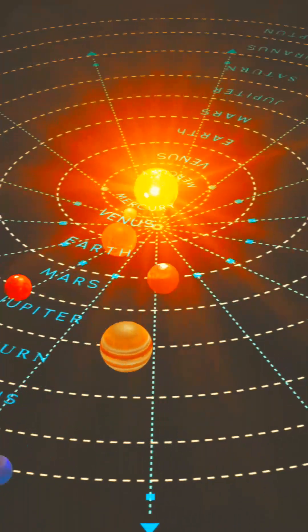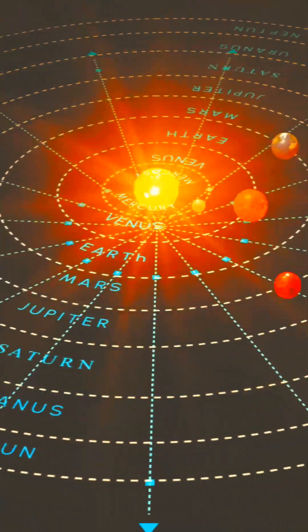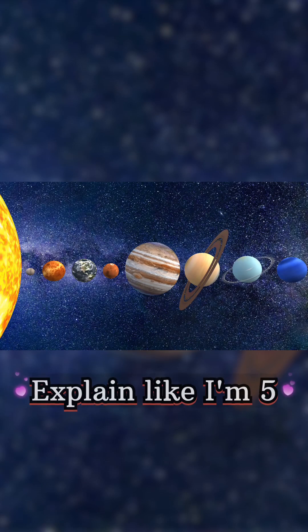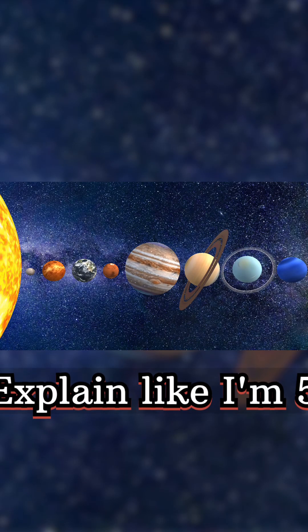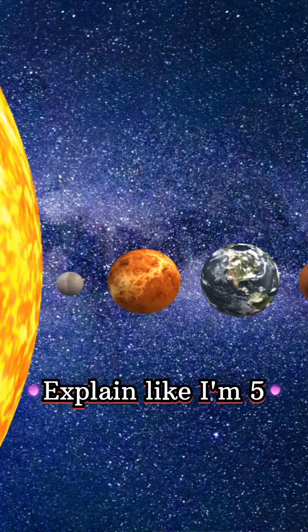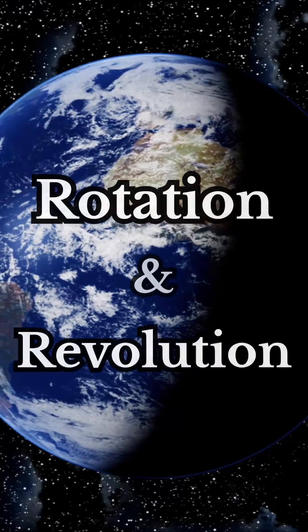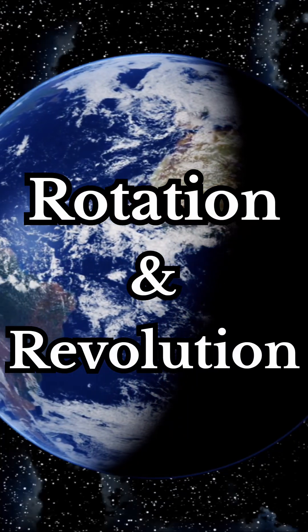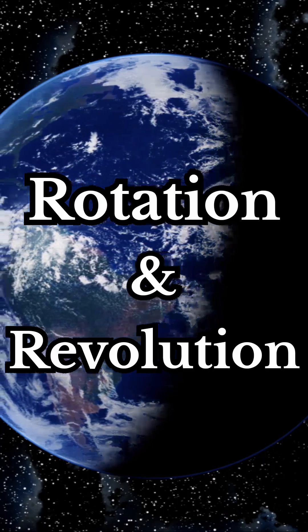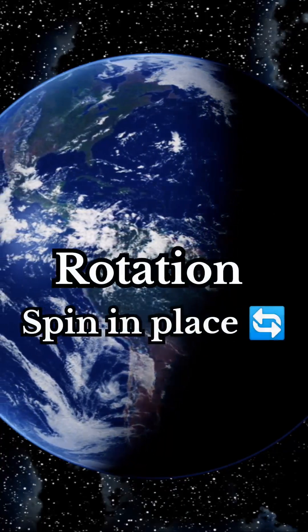Welcome to Smart Skill Library, your shortcut to smarter learning, and to our series 'Explain Like I'm Five,' where we break down big ideas super simply. Rotation and revolution sound confusing — let's make it super simple.